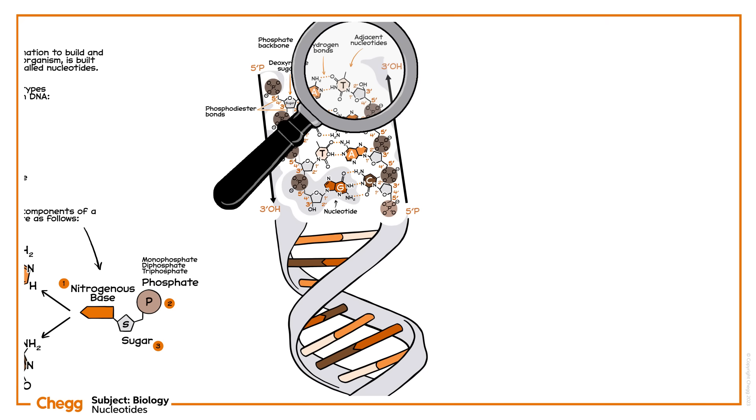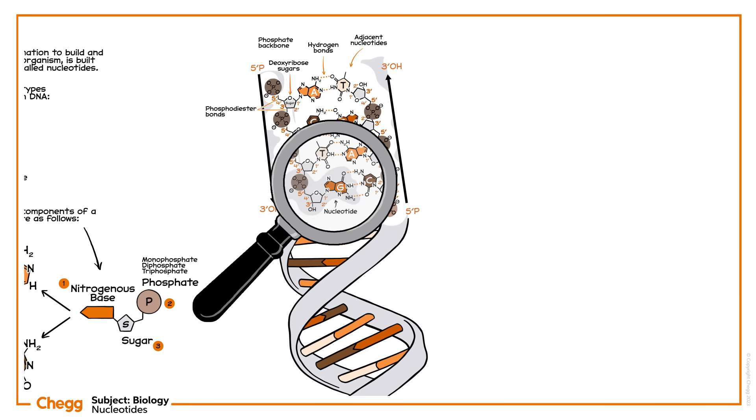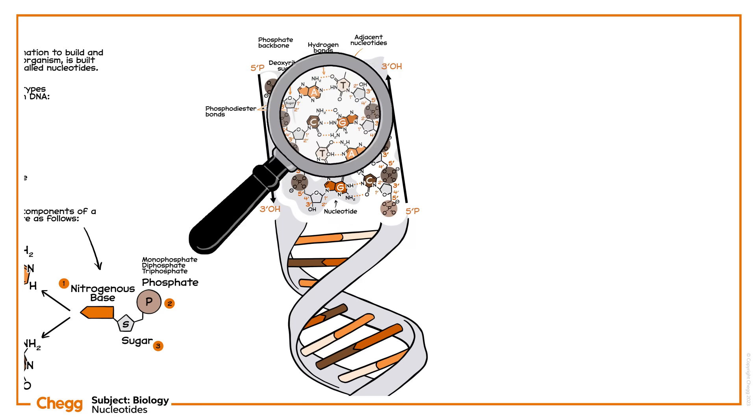In this way, the nucleotides are connected in a chain. DNA is a polymer made of two chains of nucleotides. Complementary bases are connected via hydrogen bonding between the chains.